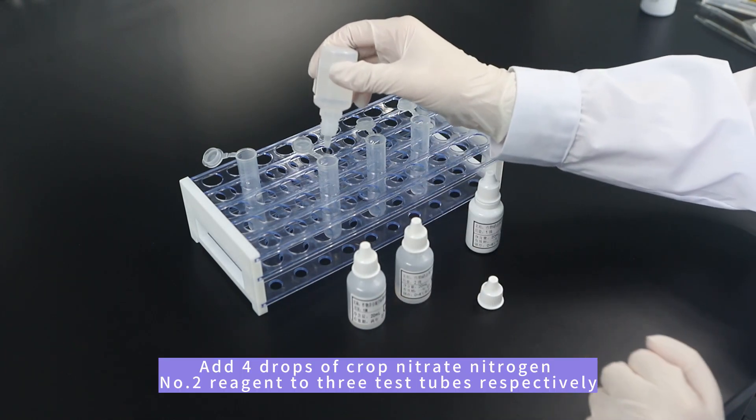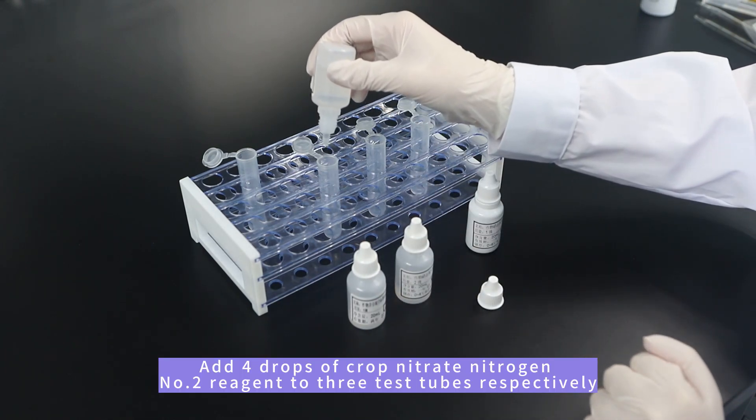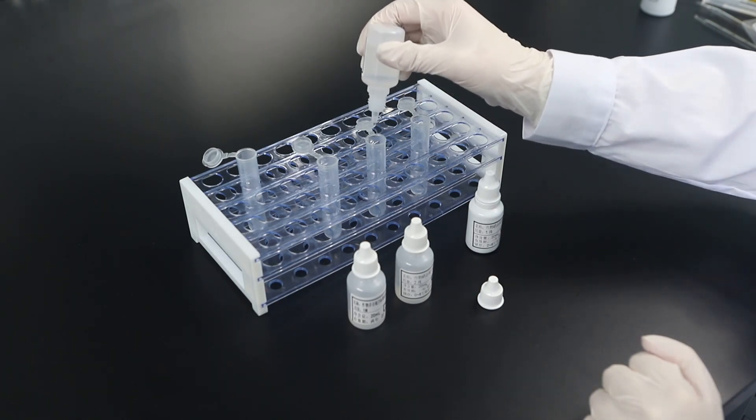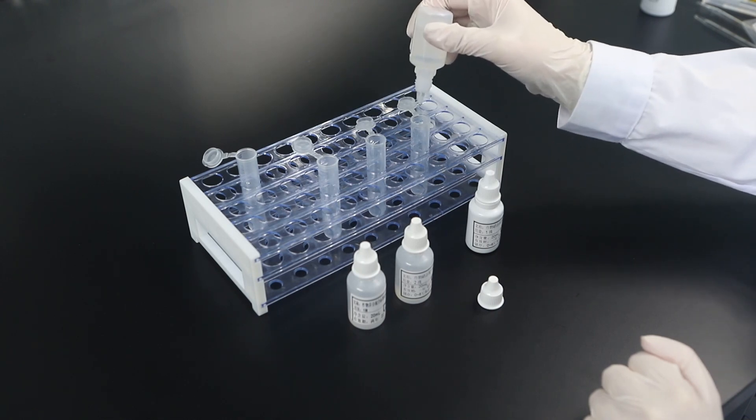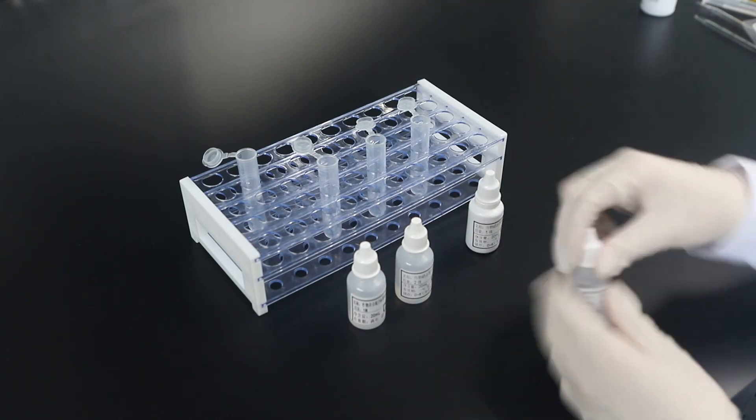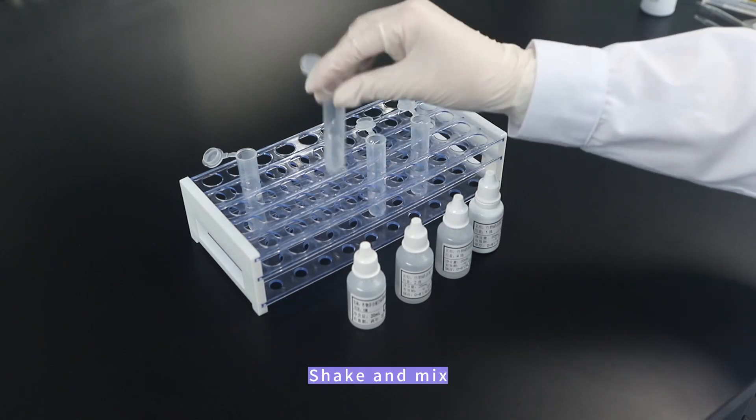Add 4 drops of crop nitrate nitrogen number 2 reagent to 3 test tubes respectively, then shake and mix.